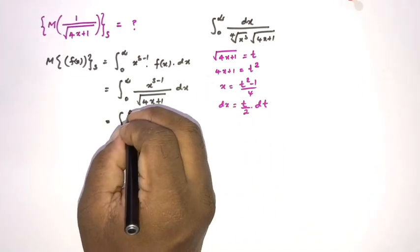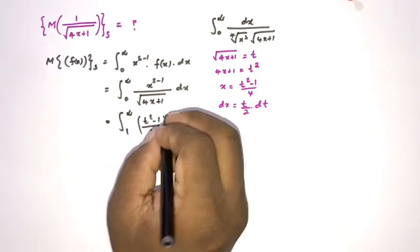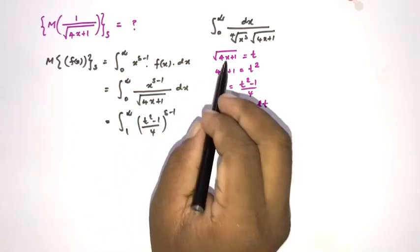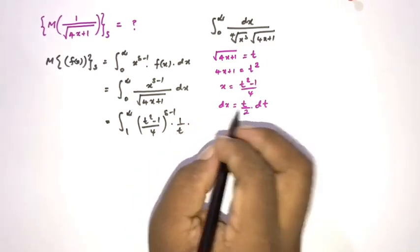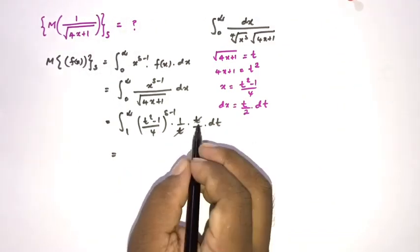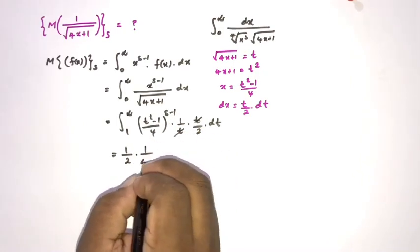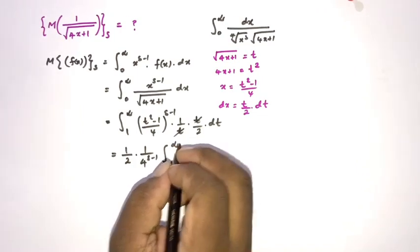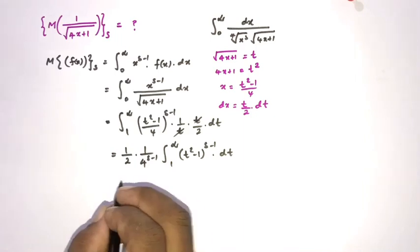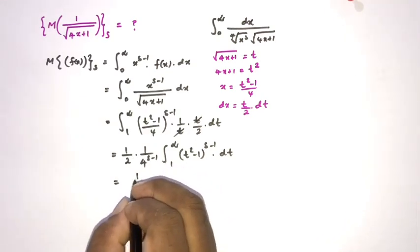We change the limits: when x goes to 1, t goes to 1; when x goes to infinity, t goes to infinity. Substituting, x equals (t² − 1)/4 raised to the s minus 1, and 1 over square root of 4x plus 1 becomes 1 over t, and dx becomes t over 2 dt. The t's cancel, and the constant 1/2 comes outside the integral. We also have 1 over 4 raised to the s minus 1, giving 1 over 2 raised to the 2s minus 1, times the integral from 1 to infinity of t squared minus 1 raised to the s minus 1 dt.